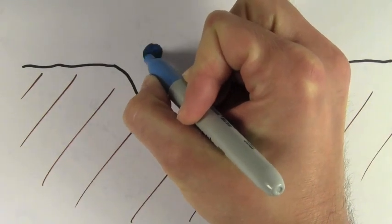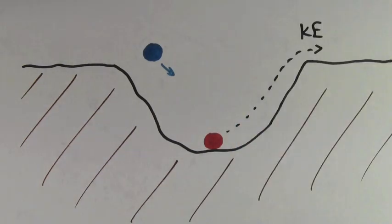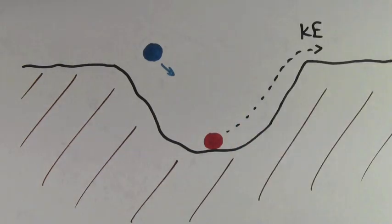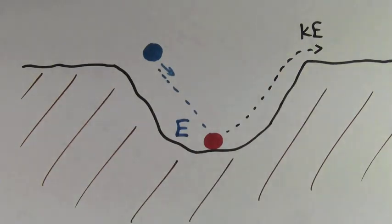Say you give it energy by throwing a blue ball at it. If the energy is big enough, that red ball may come flying out of the ditch with a certain amount of kinetic energy. But that kinetic energy is not going to be equal to the amount of energy the blue ball gave the red ball.